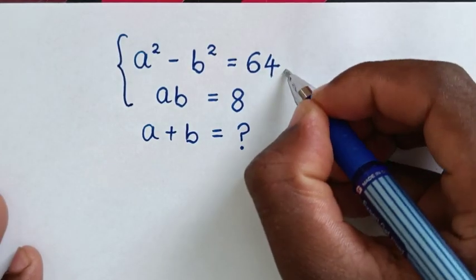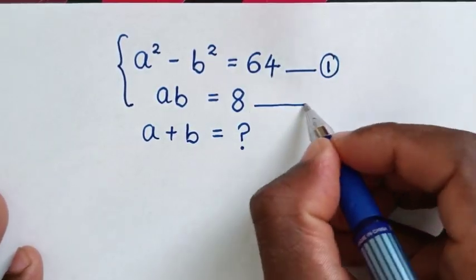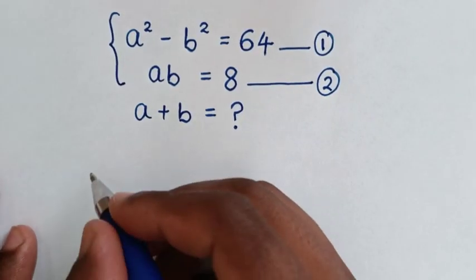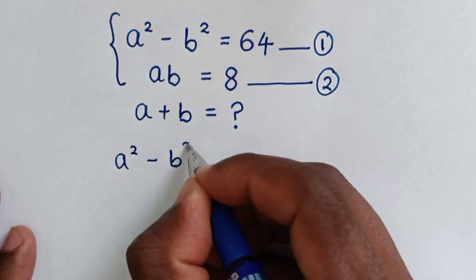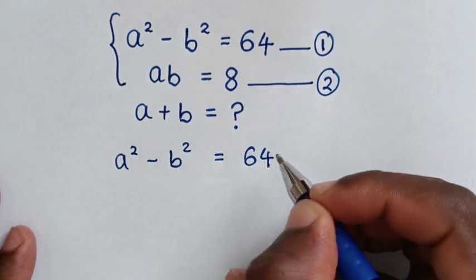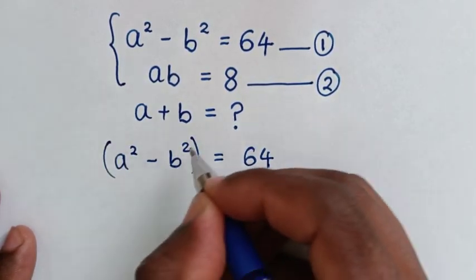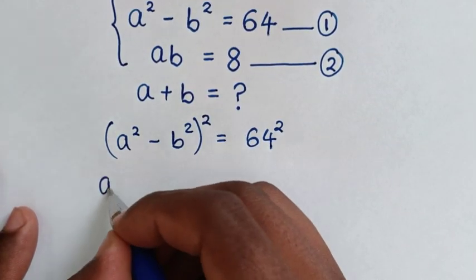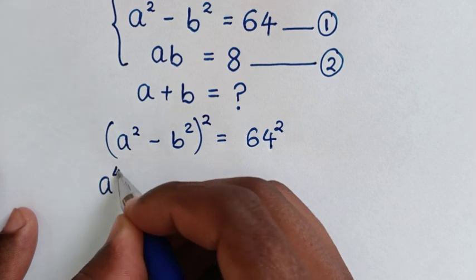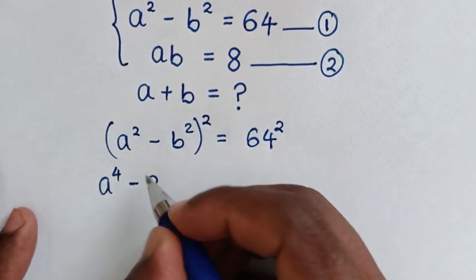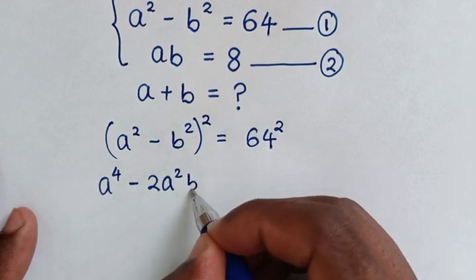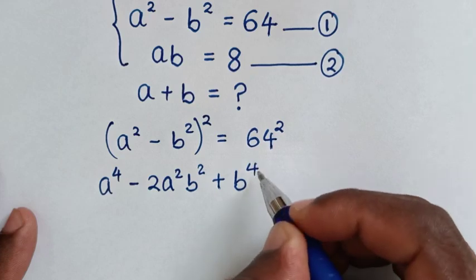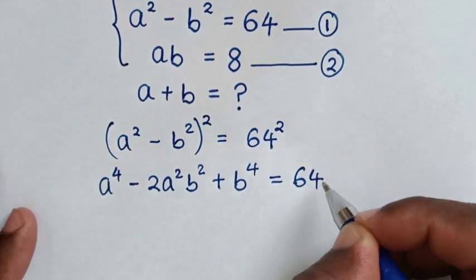From equation 1, which is a squared minus b squared equals 64, we'll square both sides. The square of a squared minus b squared gives a to the power 4, minus 2 times a squared times b squared, plus b to the power 4, equals 64 squared.